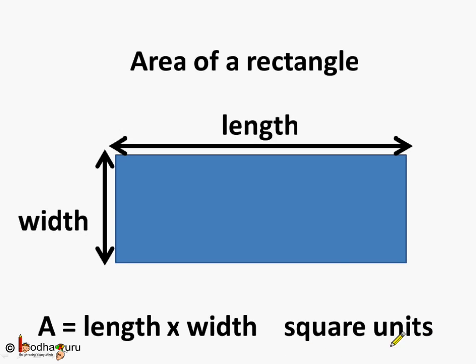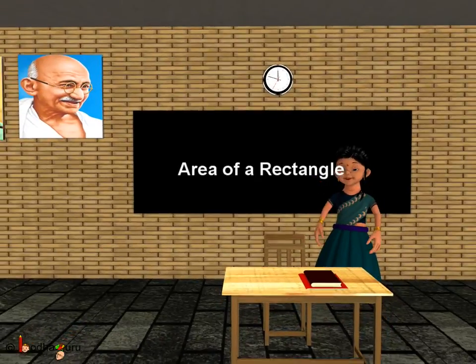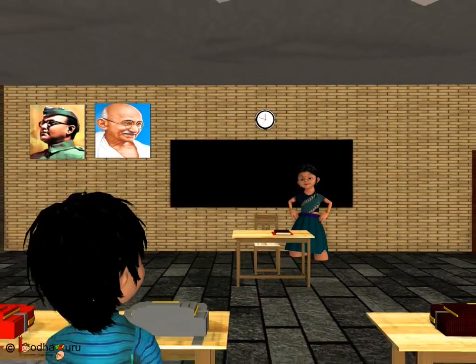So, if the length and width were expressed in meters, the area would be in square meters. If it was in kilometers, then the area would be in square kilometers. Now you know how to calculate the area of a rectangle. That's all for now. Bye-bye children.